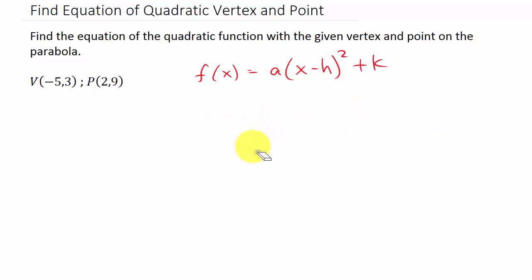Alright, so we know that for the vertex this is h and the 3 is k. So there's my h and my k.